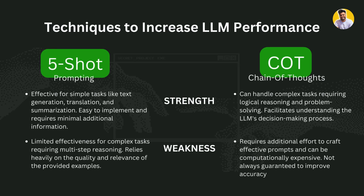The weakness of 5-shot prompting is its limited effectiveness for complex tasks that require multi-step reasoning, and it relies heavily on the quality and relevance of the provided examples. The weakness of chain of thought prompting is that it requires additional effort to craft an effective prompt, because you need to create a prompt that is more reasonable and logical.